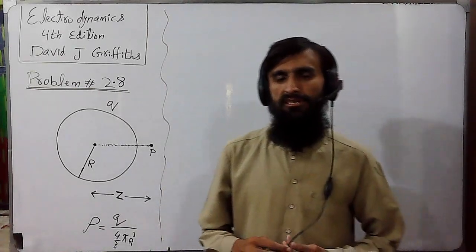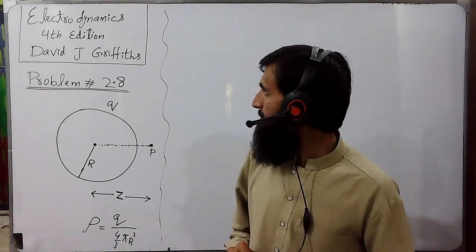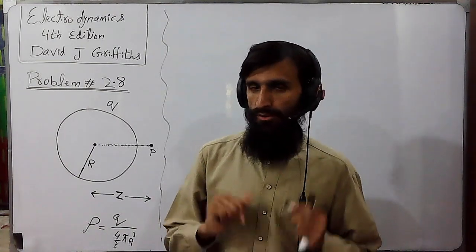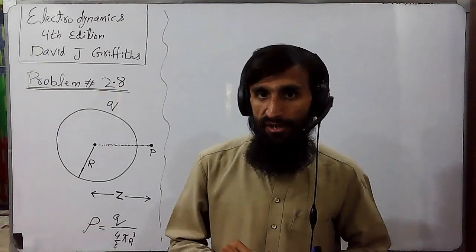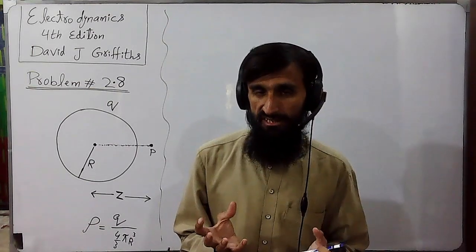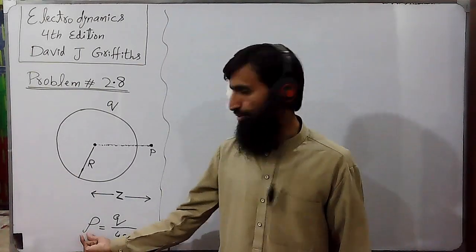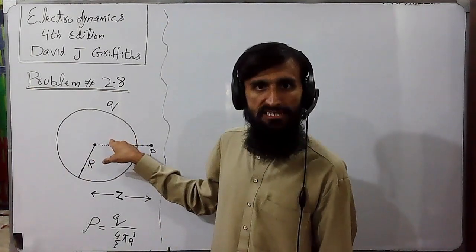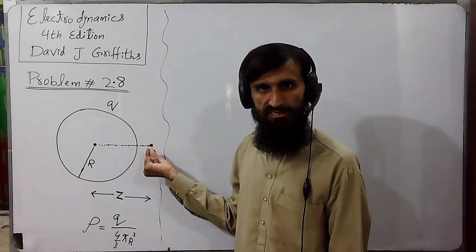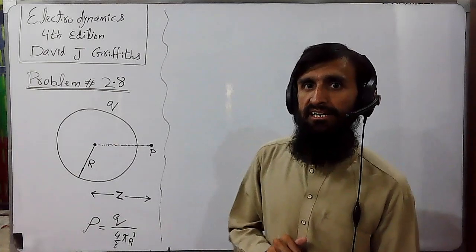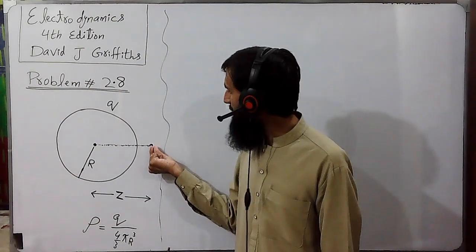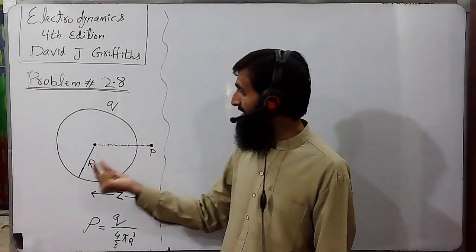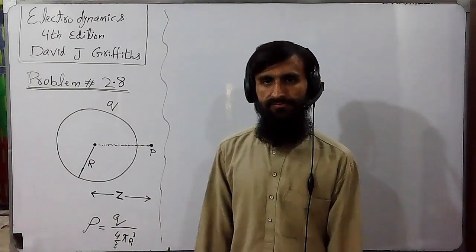Assalamu alaikum, hello students. Today we have to solve problem number 2.8 of Electrodynamics, fourth edition, by David J. Griffiths. In this problem we have been asked to find the electric field due to a uniformly charged sphere having uniform volume charge density rho — at some interior points and at some exterior points. The exterior point is named P, and its distance from the center of the sphere is taken as Z.